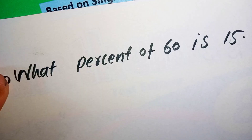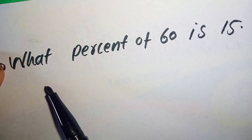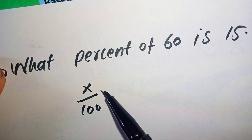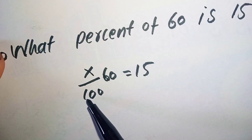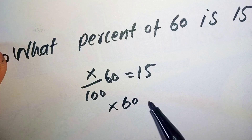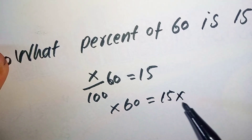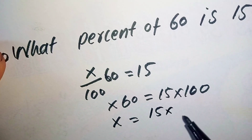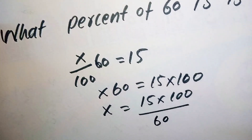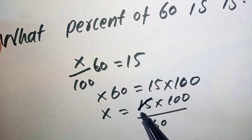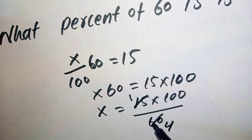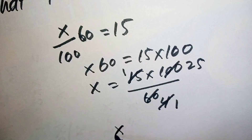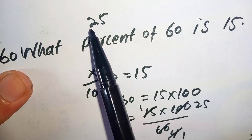In this example we are finding what percent of 60 is 15. So we suppose that X percent of 60 is 15. Multiply 100 by 15, so X times 60 is equal to 15 times 100. X is equal to 15 multiplied by 100 divided by 60. So 15 times 1 is 15, 15 times 4 is 60, 4 times 25 is 100, so the value of X is 25. That means 25% of 60 is 15.